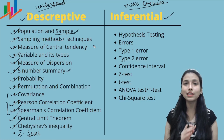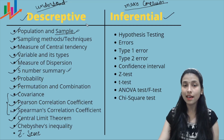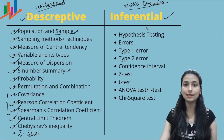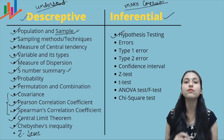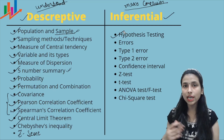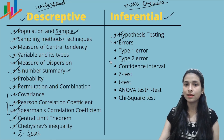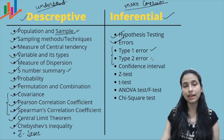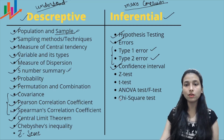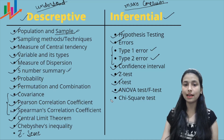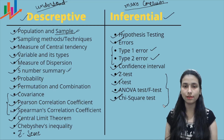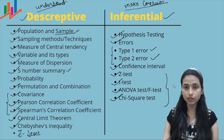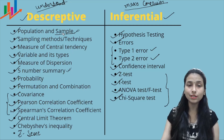Those are all the topics for descriptive statistics. Moving to inferential statistics, the first topic is hypothesis testing, which is one of the most important topics and lets you analyze the data. Next are errors — Type 1 error and Type 2 error. Then confidence interval, followed by the z-test, t-test, ANOVA test (also called the f-test), and finally the chi-square test. All these tests are used to draw conclusions from your dataset and will be covered in the playlist.